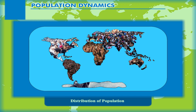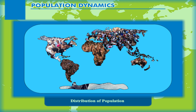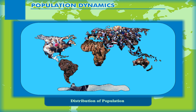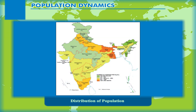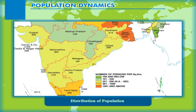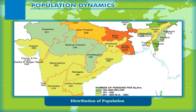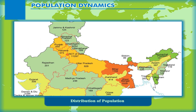The entire population of the world is not evenly distributed. It is unevenly sprinkled over different parts of the world. There are certain places where large numbers of people live and some other places where very few people live. The density of population is the relationship between the total population and the total area in square kilometres, shown as the number of people per square kilometre.